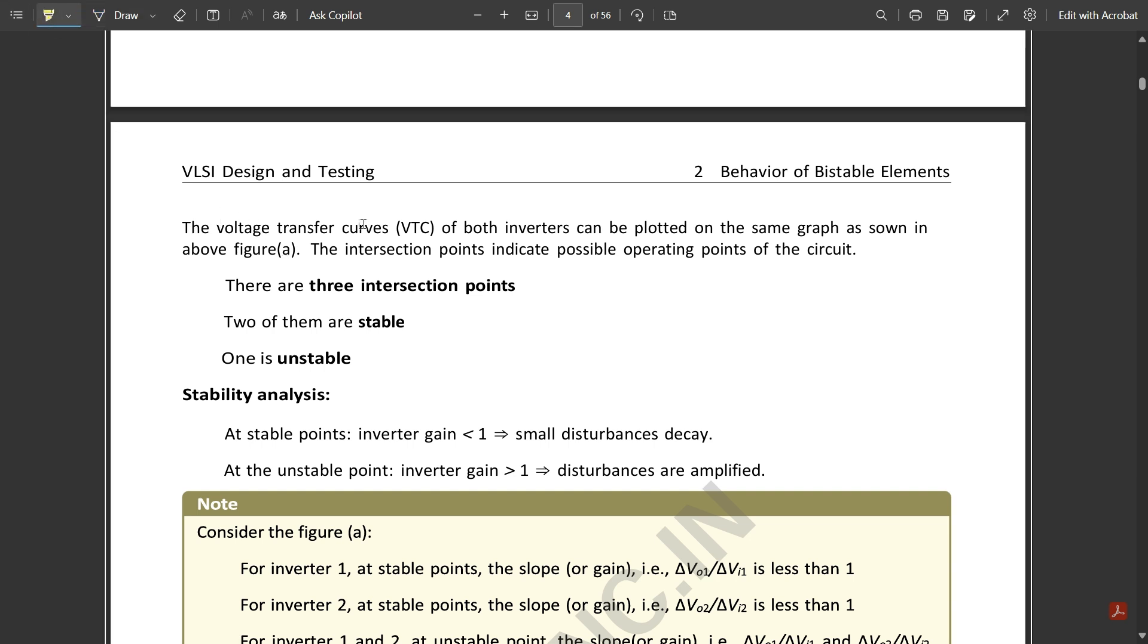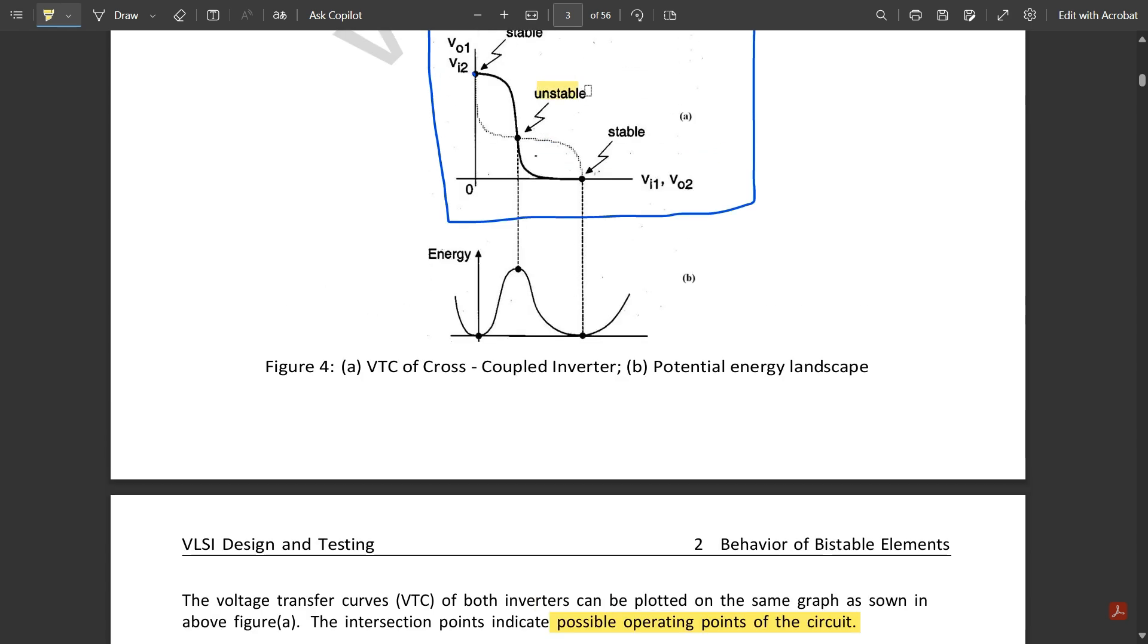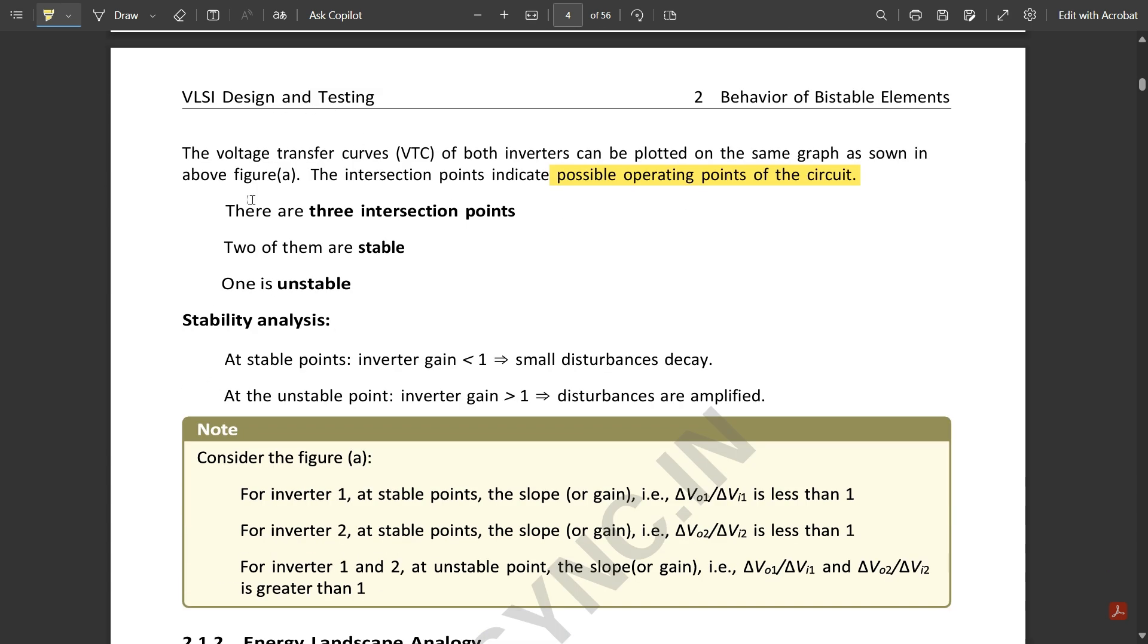The voltage transfer curves VTC of both inverters can be plotted on the same graph. The intersection points indicate possible operating points of the circuit. There are three intersection points: two of them are stable and one is unstable.